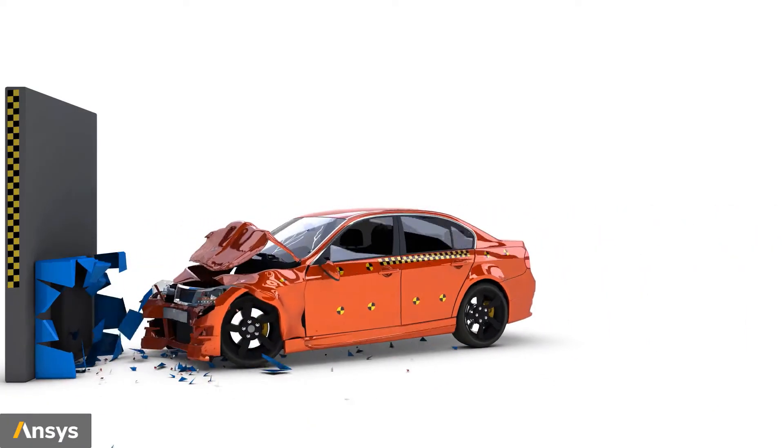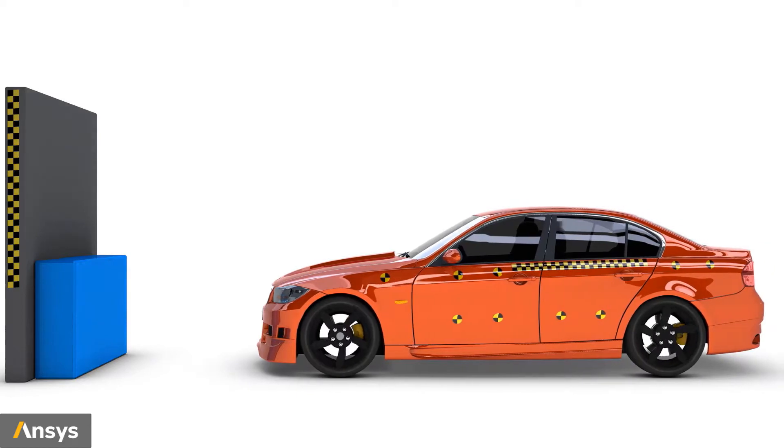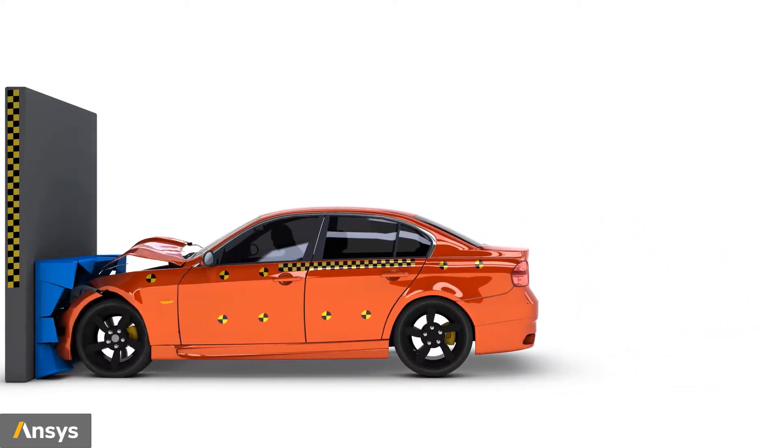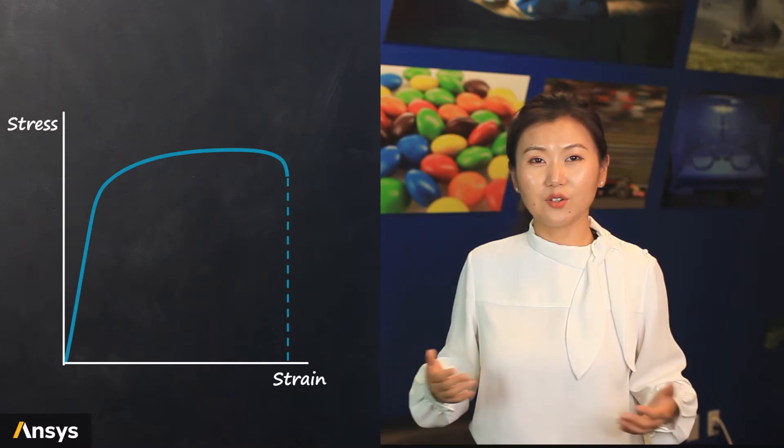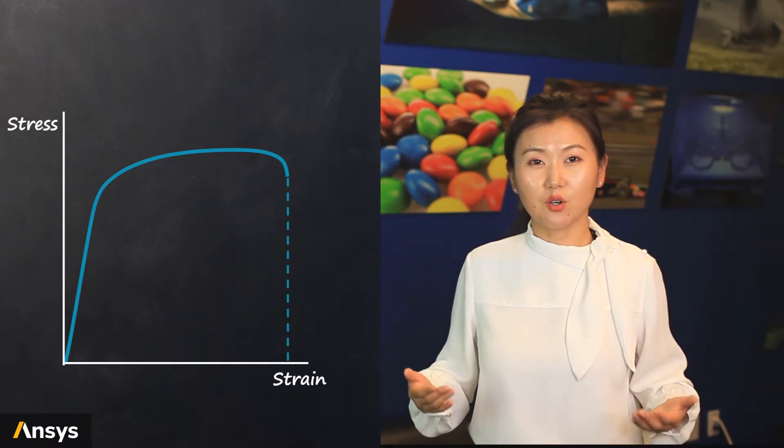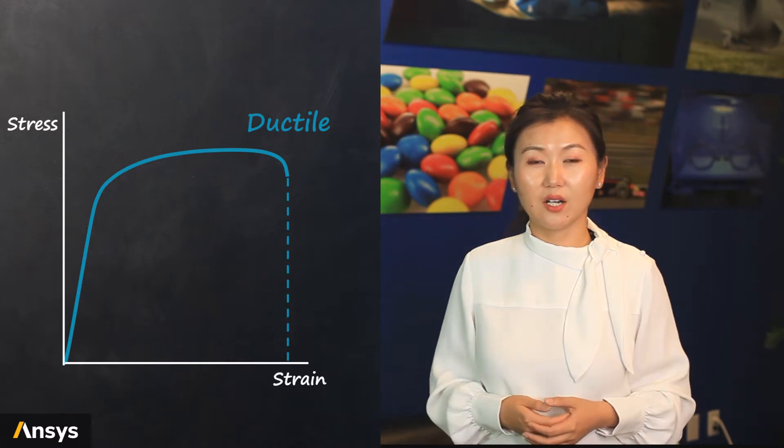For a car crash example, distortion grows in the materials till the entire front part of the car is compressed to a minimum. The strength of the material is not lost suddenly, but gradually. We call such material ductile material. Most metal materials have such behavior under loads.